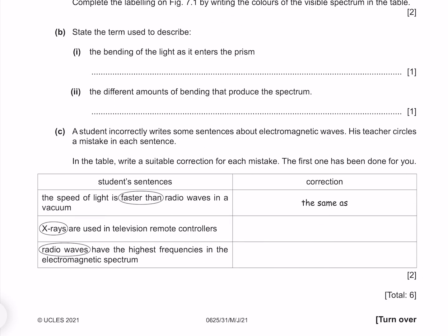State the term used to describe the bending of light as it enters the prism. That is refraction. And the different amounts of bending that produce the spectrum, which is dispersion.